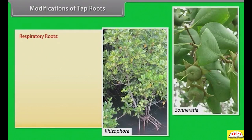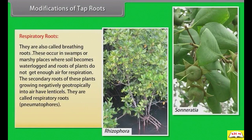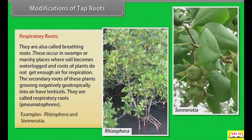Respiratory roots are also called breathing roots. These occur in swampy or marshy places where the soil becomes waterlogged and roots do not get enough air for respiration. The secondary roots of these plants grow negatively geotropically into the air and have lenticels — they are called pneumatophores. Examples: Rhizophora and Sonneratia.